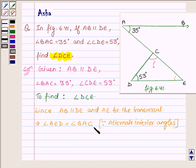Now, angle BAC is equal to 35 degrees. So this implies angle AED is also 35 degrees. Or we can say angle CED is 35 degrees.